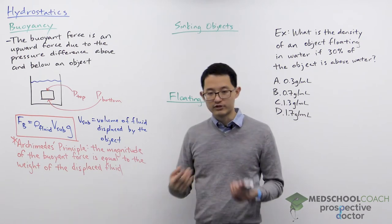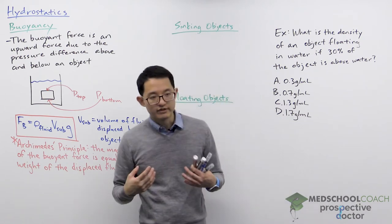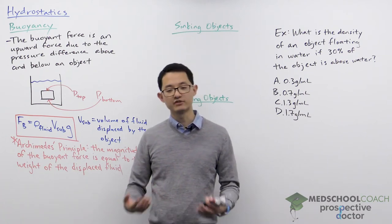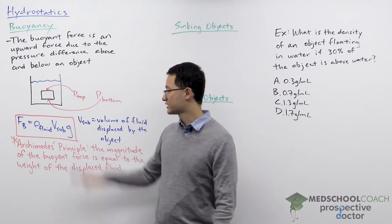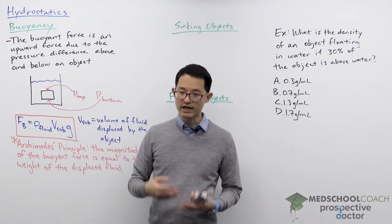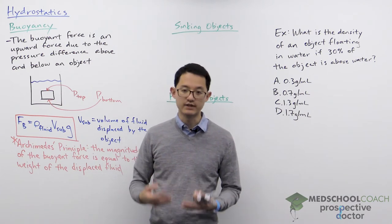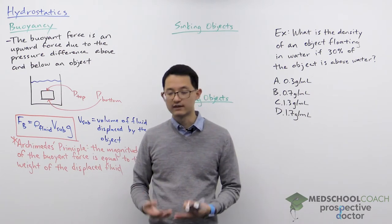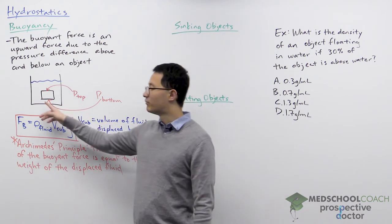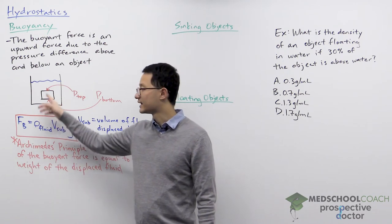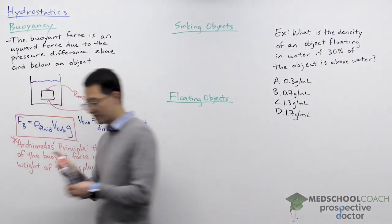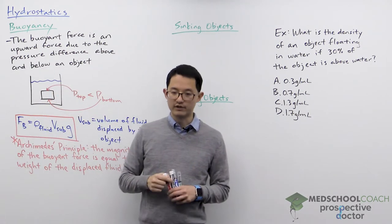When talking about pressure, we have to consider atmospheric pressure and hydrostatic pressure. The atmospheric pressure is constant everywhere, so it won't differ between the top and bottom of the object. The hydrostatic pressure, however, is directly proportional to depth — the greater the depth, the greater the hydrostatic pressure. Since the bottom of the object has greater depth, the pressure below the object is greater than the pressure above.